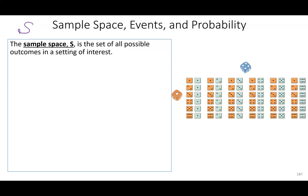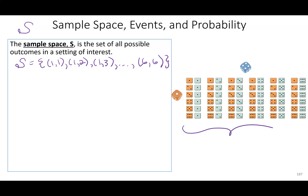It depends on what I want to focus on. If I want to focus on what I can roll, my sample space could include rolling a one and a one, a one and a two, a one and a three, and so on all the way through a six and a six — basically all 36 combinations. So there are 36 combos, and that would be my sample space for all possible rolls.